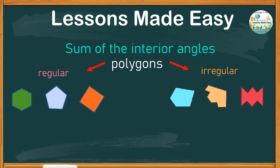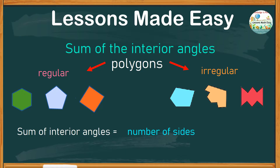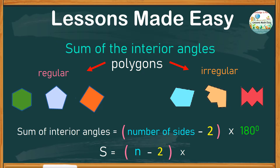The general rule to find the sum of the interior angles of a polygon is to count the number of sides, subtract 2, then multiply the difference by 180 degrees. We can rewrite this formula as S equals N minus 2, times 180 degrees, where N represents the number of sides.